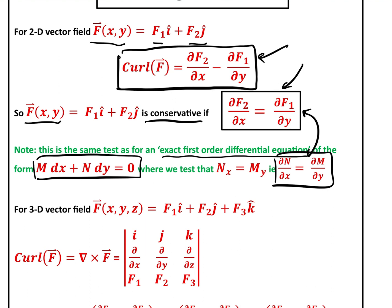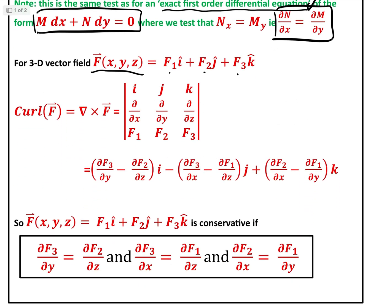What we're more interested in now is the 3D vector field f(x, y, z) = f1·i + f2·j + f3·k. The curl of f is defined as del cross f — that's the cross product — and it is found by evaluating the determinant where i, j, k is in the first row; the partial derivatives with respect to x, y, and z are in the second row; and f1, f2, f3 are in the third row.